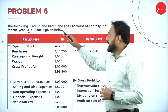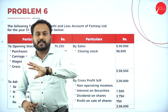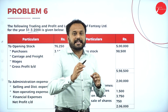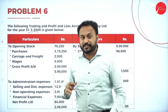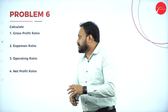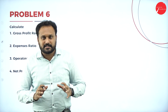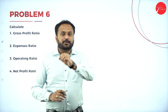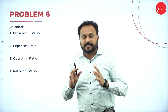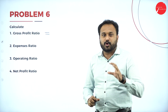The following trading and profit and loss account of Fantasy Limited for the year 31/3/2000 is given. Now, whether it is a balance sheet or a trading and profit and loss account, you don't need to worry about it. The question asks us to calculate: gross profit ratio, expenses ratio, operating ratio, and net profit ratio. If I know the formulas, I just need to pick the answers from the question itself.